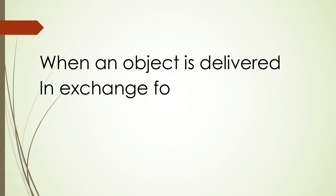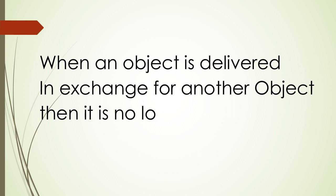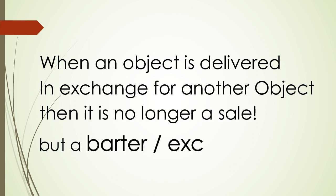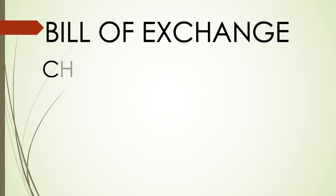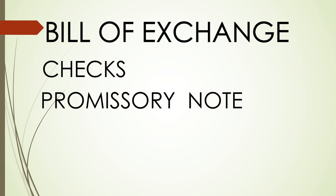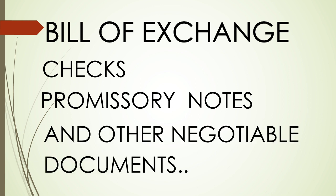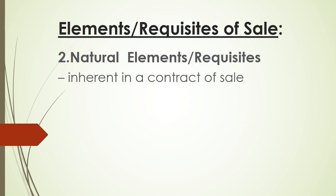The word 'equivalent' here doesn't mean equivalent in terms of object or property, because when an object is delivered in exchange for another object, it is no longer a sale but a barter or exchange. So the meaning of 'equivalent' refers to documents or instruments that could be used as a substitute for money — for example, negotiable instruments like bills of exchange including checks, as well as promissory notes and other negotiable documents of title.